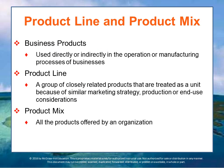Business products are directly or indirectly used in the operation or manufacturing processes of businesses. They can be further classified into raw materials, which are natural products from the earth; major equipment, which are large expensive items used in production; and accessory equipment — items that are not part of the final product, such as computers, fax machines, and hand tools.